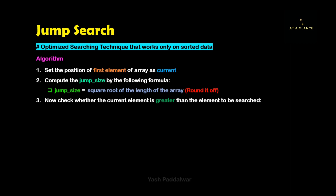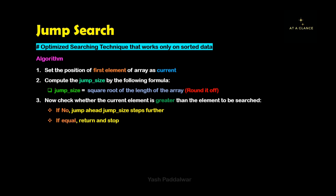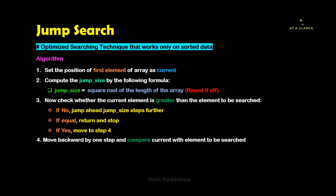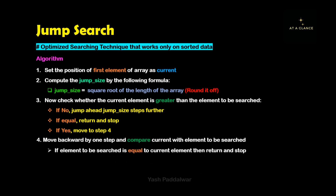Next step is to check whether the current element is greater than the element to be searched. There are three possibilities. First, if the current element is not greater than the element to be searched, then the element to be searched is lying on the right hand side, so you need to jump jump-size steps ahead. Another possibility is that if the current element is equal to the element to be searched, then you return and stop. In the other case, if the current element is greater than the element to be searched, then you need to directly move to step 4.